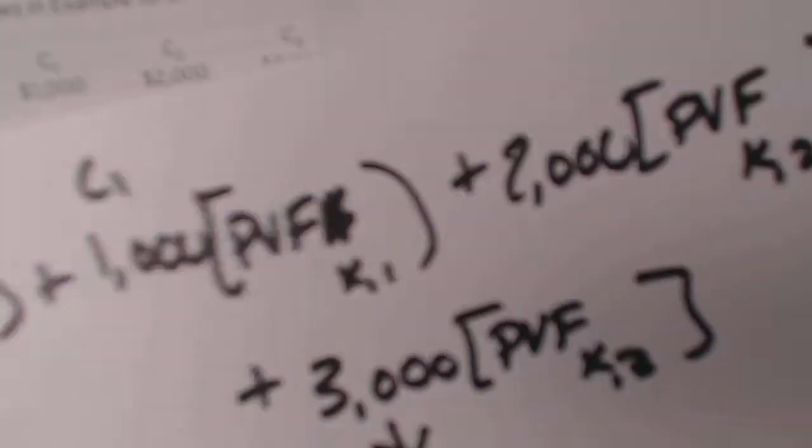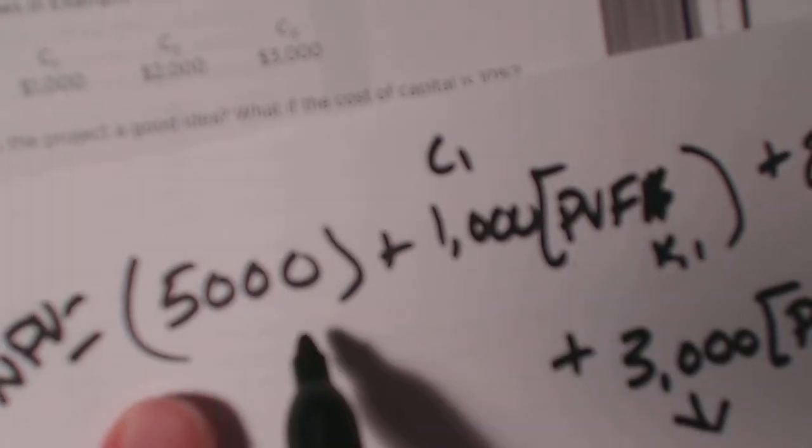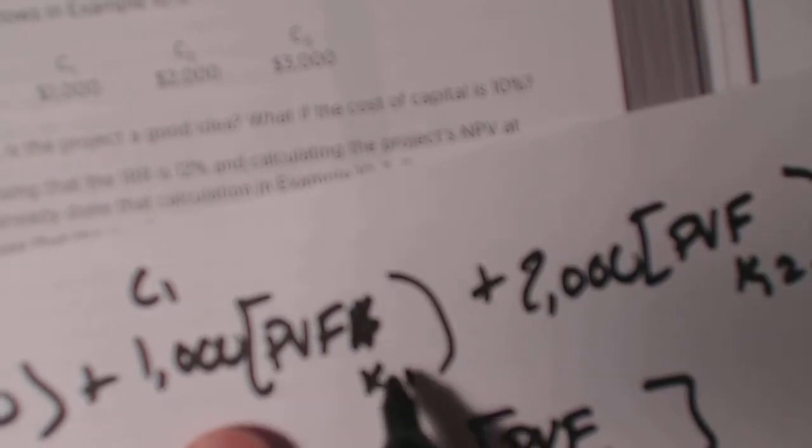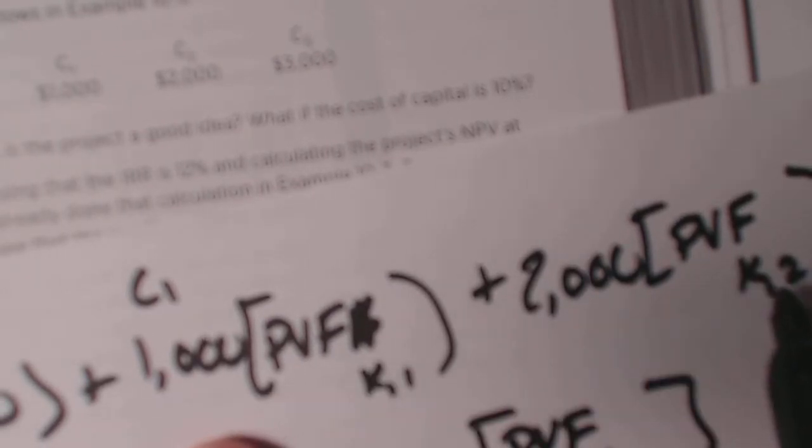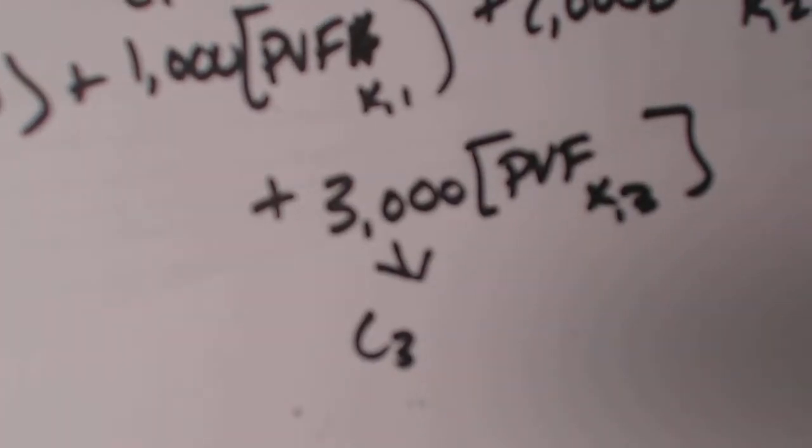So basically what you're doing is you are running the same basic equation that you had before. NPV is equal to the cost of capital plus the first year times PVF K1 plus 2,000 times PVF K2 and then 3,000 PVF K3. Again, we go to the PVF tables in order to find the numbers.